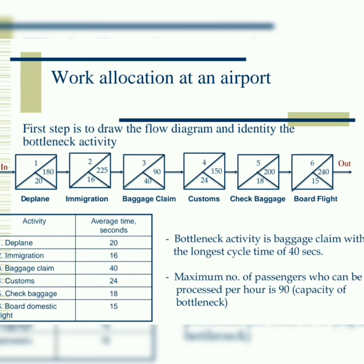The 180 for activity one is 1/20 × 3600; the 225 is 1/16 × 3600. Don't calculate capacity as '2 over 16' — the 1, 2, 3 are just numbering the activities, the formula numerator is always 1. The 90 is 1/40 × 3600, and the 240 is 1/15 × 3600. If you take your time, you'll get it correct.